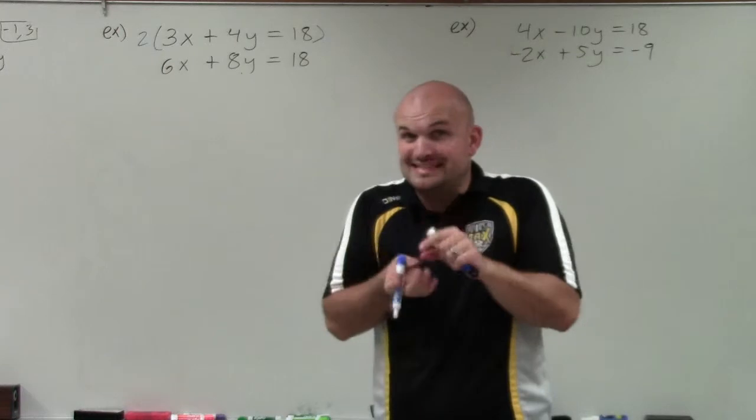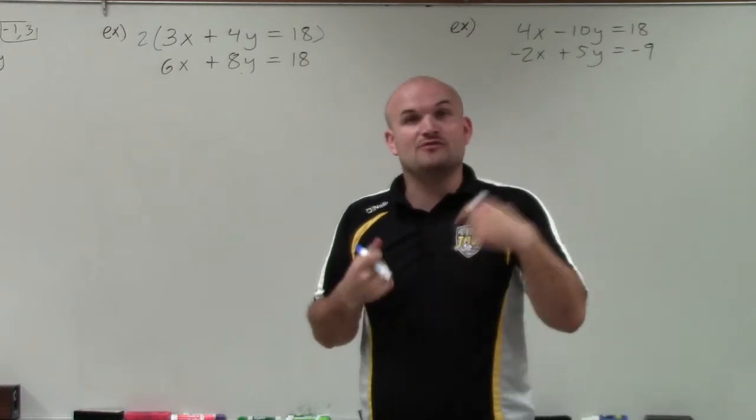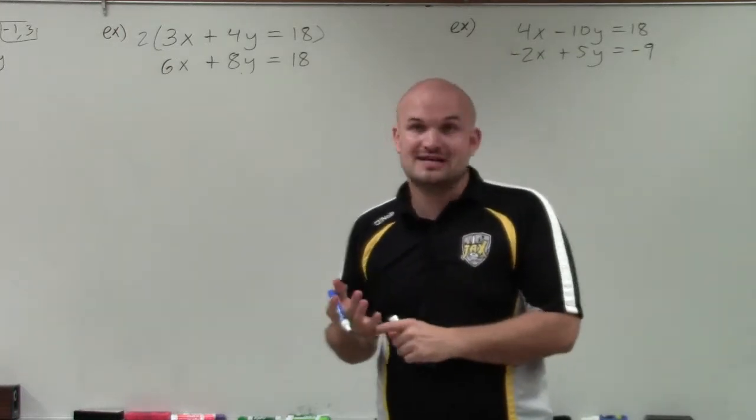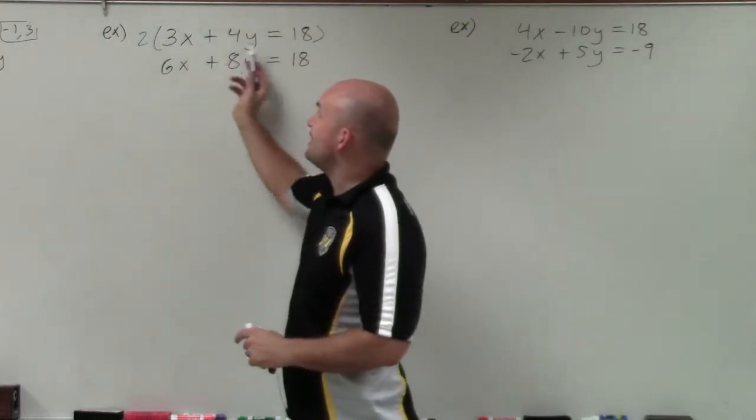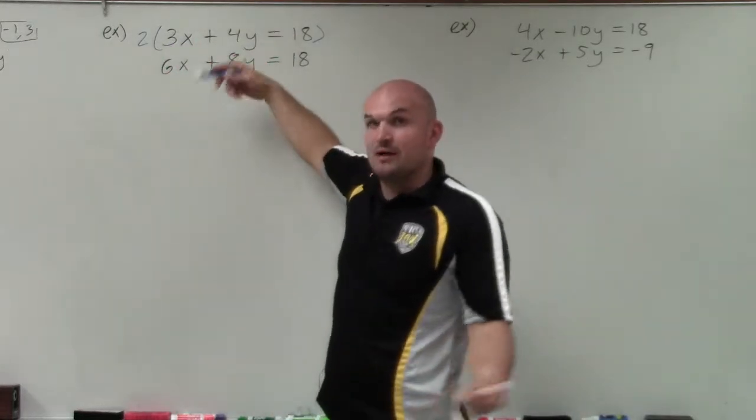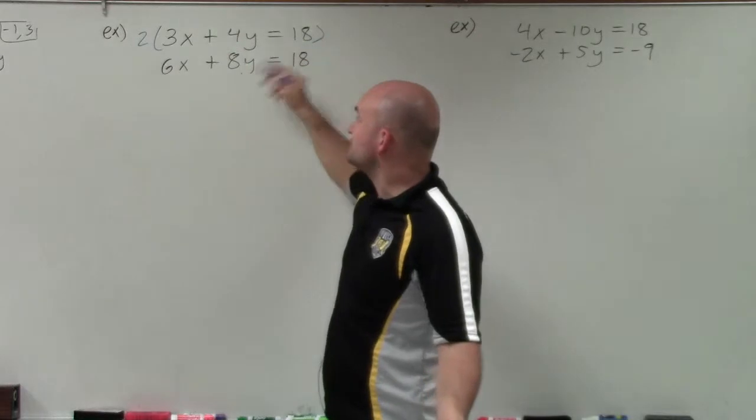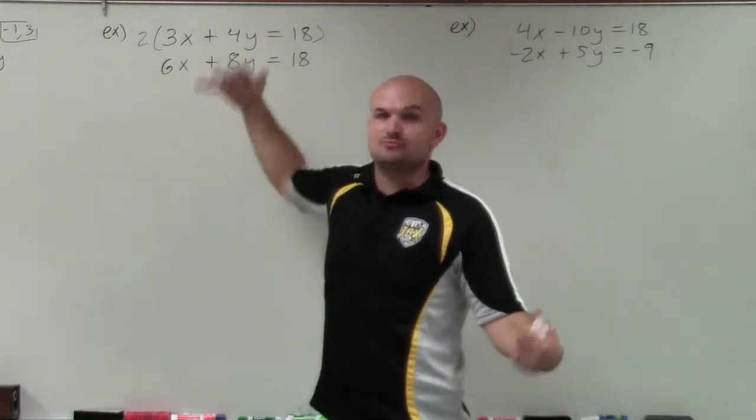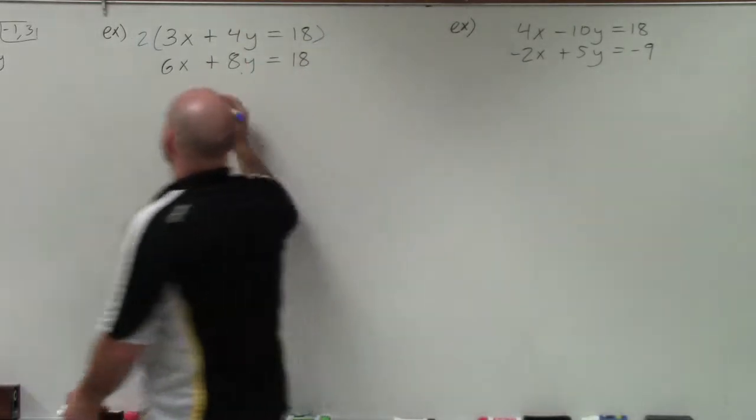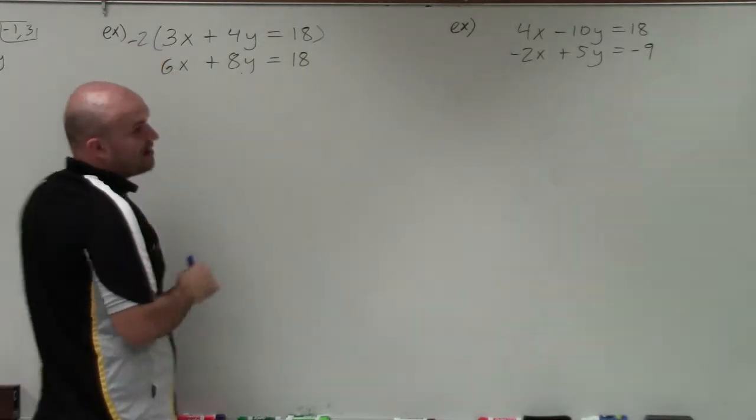Now, when you're using addition and you need to eliminate a variable, one of the coefficients has to be positive and one has to be negative. So if I multiply by a positive 2, that's going to be a positive 6x, a positive 8y, which is fine, and a positive 36, which is fine. But then you'd have to subtract the two equations. And I would prefer to add them. So I'm going to multiply by a negative 2.